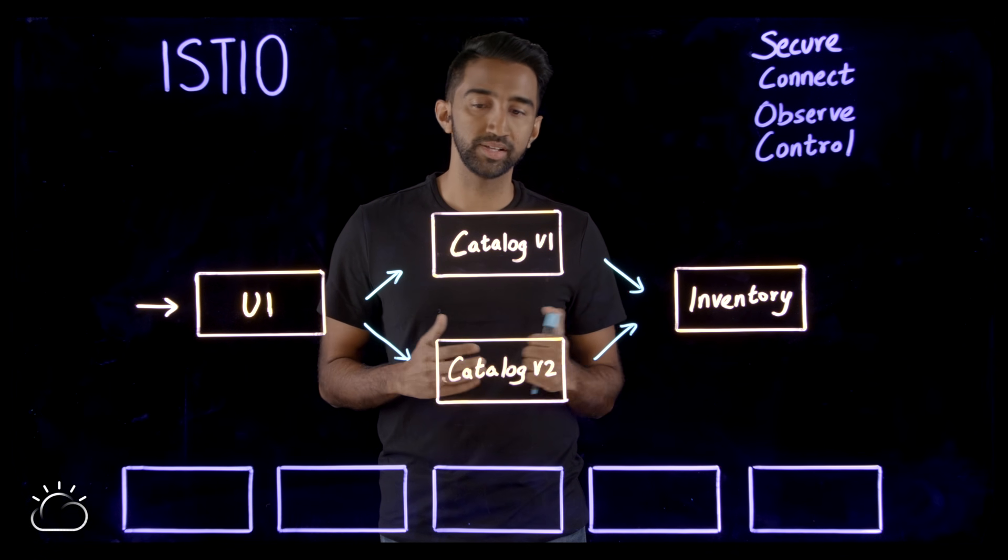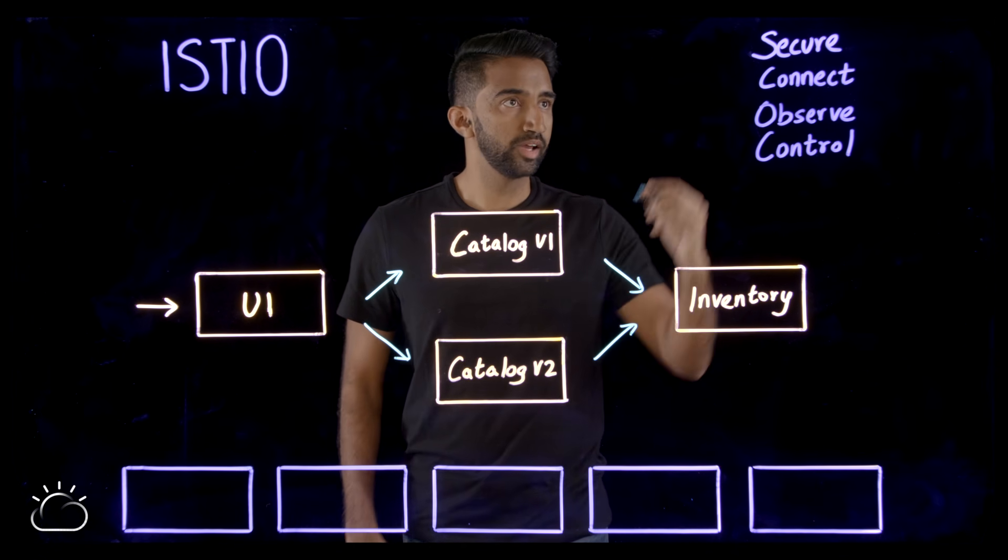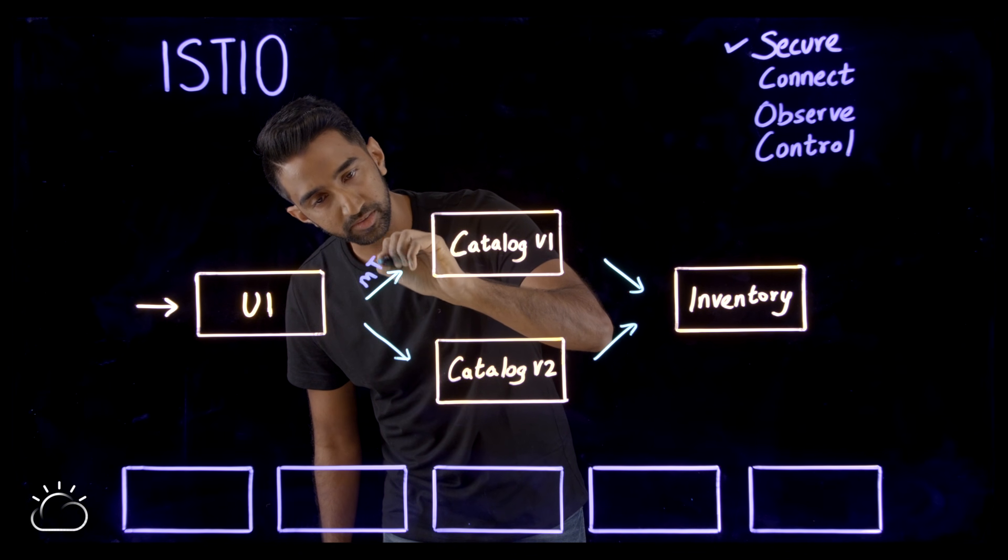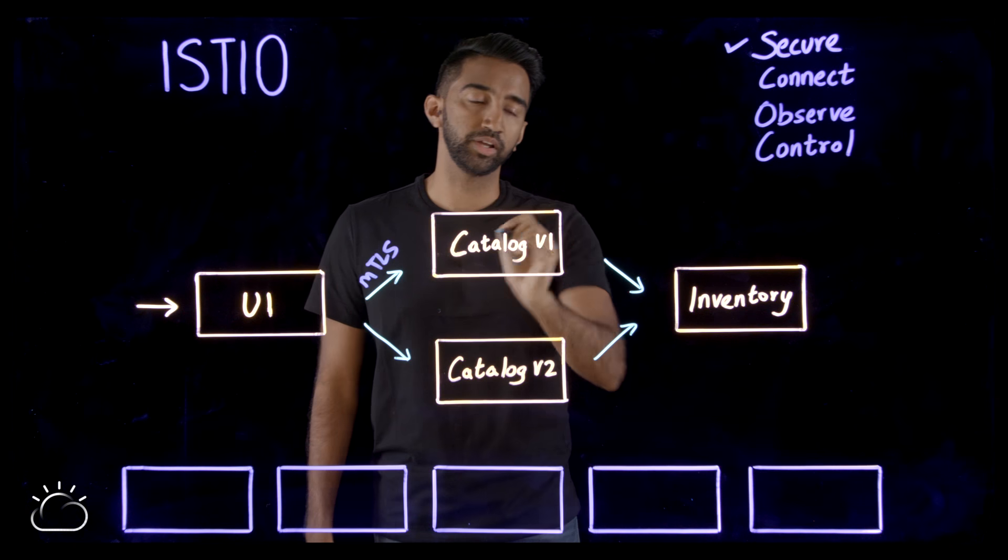The number one reason why someone uses a service mesh is because they want to secure their workload. So they want mutual TLS when one service is talking to another.